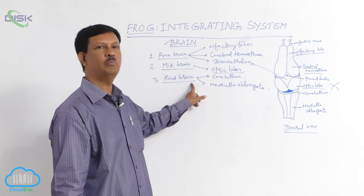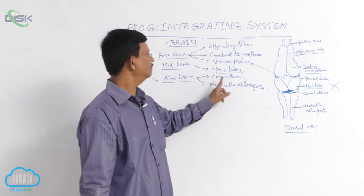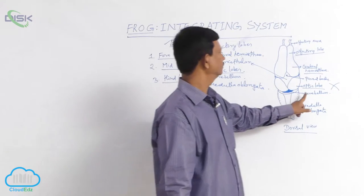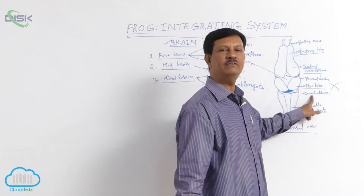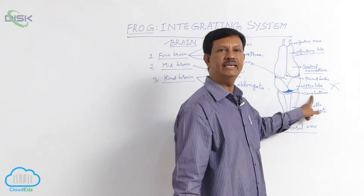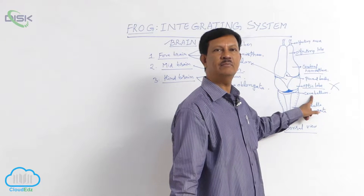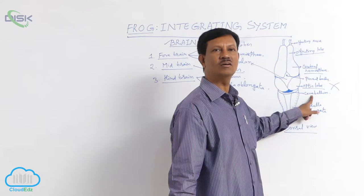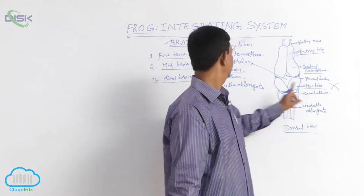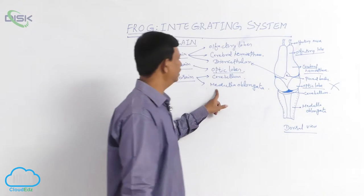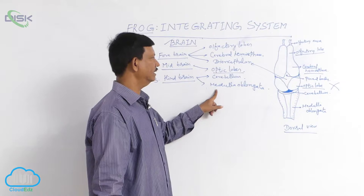The hindbrain includes two parts: the cerebellum, whose main function is equilibrium and balance, and the medulla oblongata.